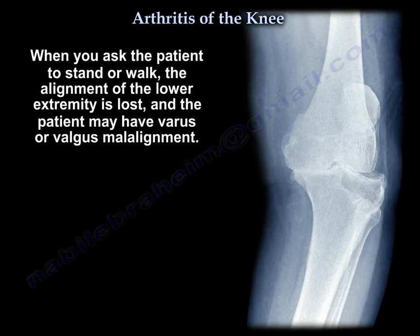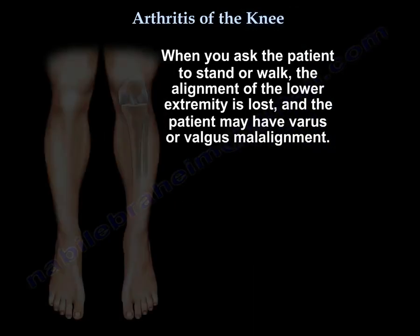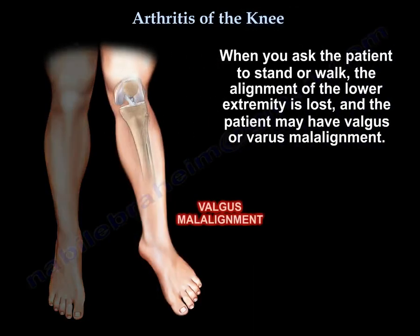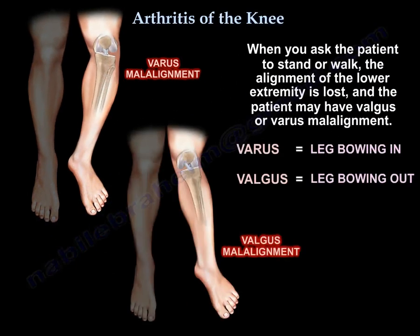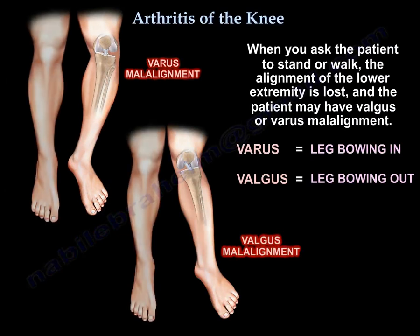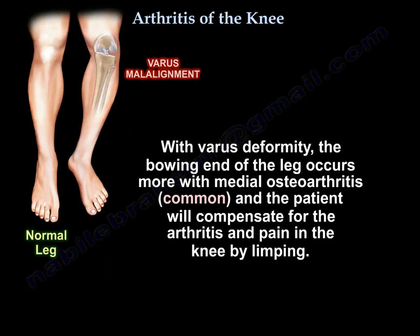When you ask the patient to stand or walk, the alignment of the lower extremity is lost, and the patient may have valgus or varus. Varus means the leg is bowing in, and valgus means the leg is bowing out. Here you can see it compared to a normal leg. The varus — the bowing in of the leg — occurs more with medial osteoarthritis, which is common.